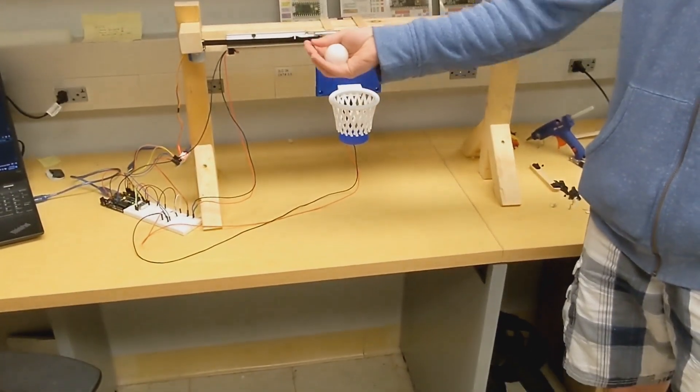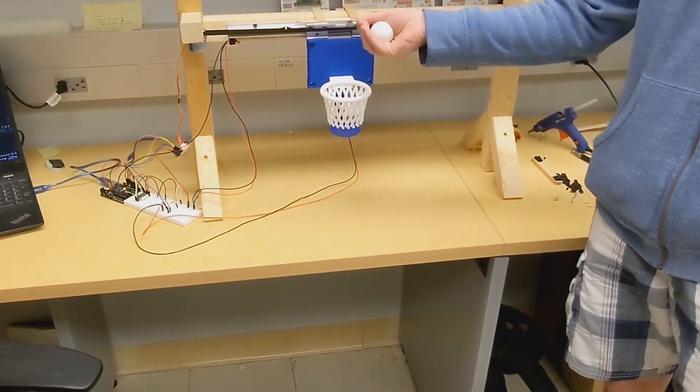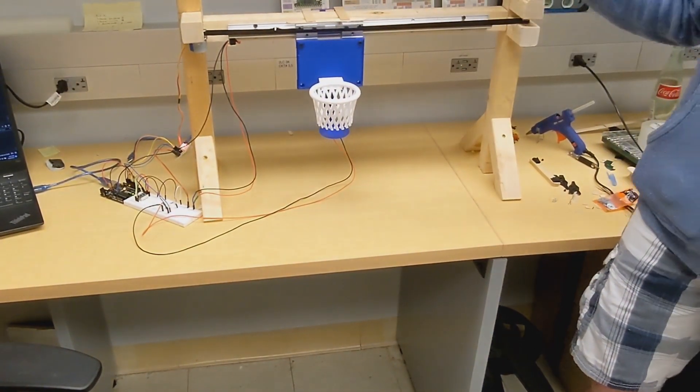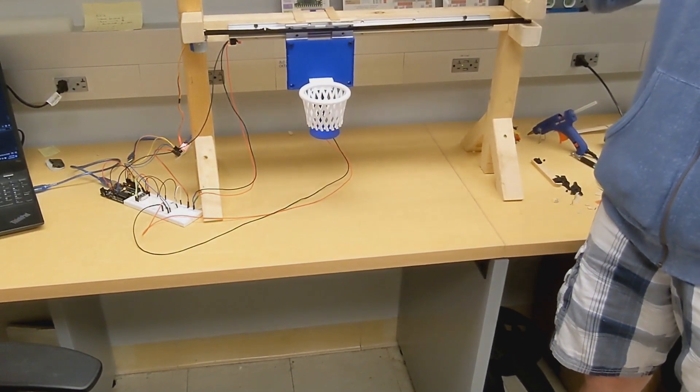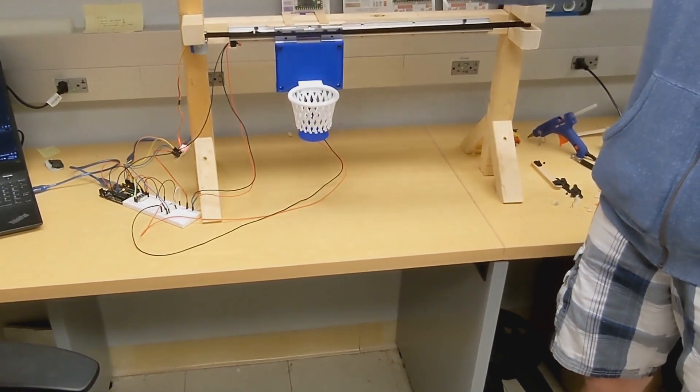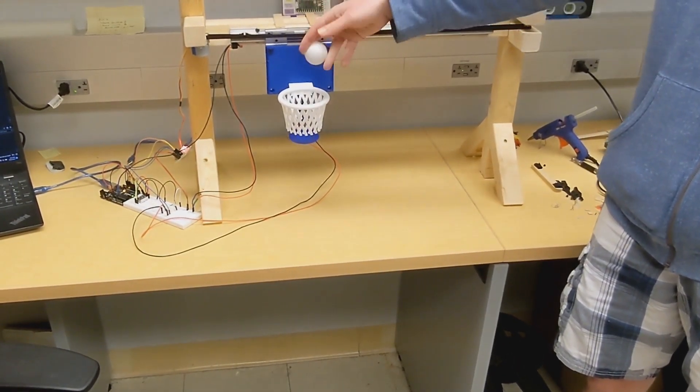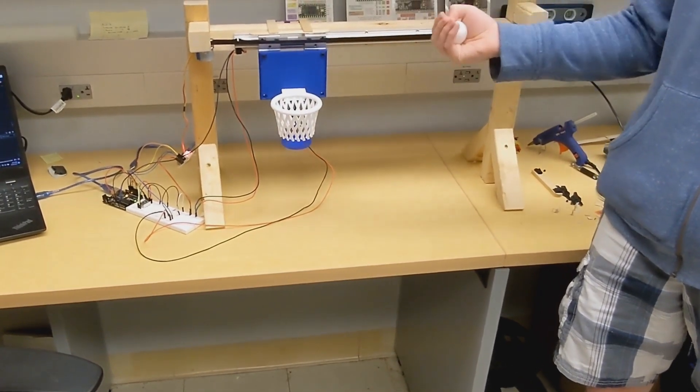Once it makes contact with the limit switch, it will move back out just slightly, and that becomes its home position. From there, I'll be able to start putting the ball in the hoop, and it'll begin to move to random positions.